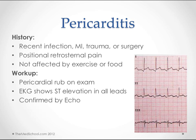Patients will come in with a history of recent infection, an MI, trauma, or surgery — a lot of times an upper respiratory infection from a couple weeks ago. They'll have this positional retrosternal pain, which is in the same area where you might feel angina or an MI, but pericarditis patients describe it differently. It's somewhat relieved by sitting up and leaning forward, and it's not going to be affected by exercise or food.